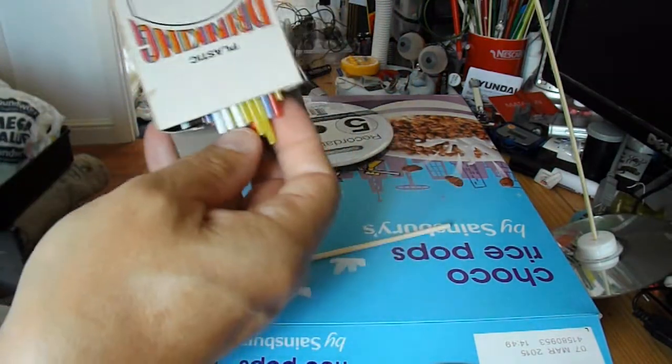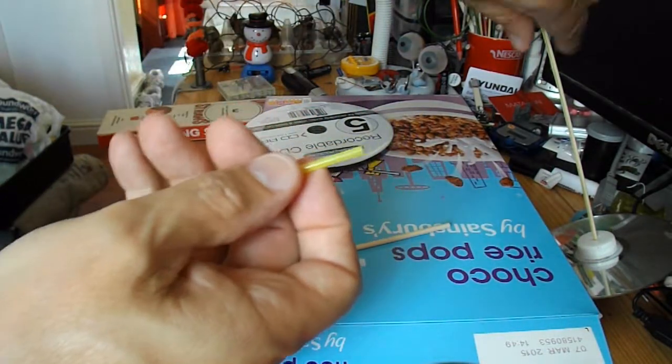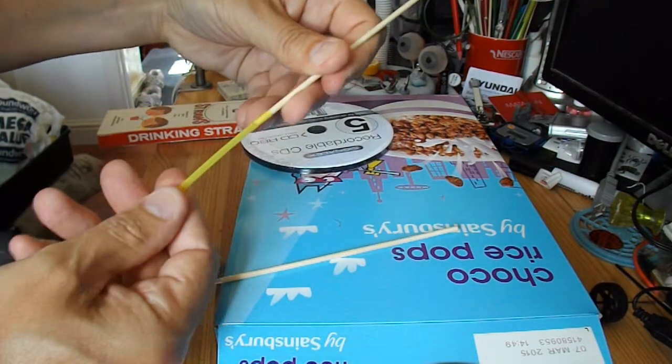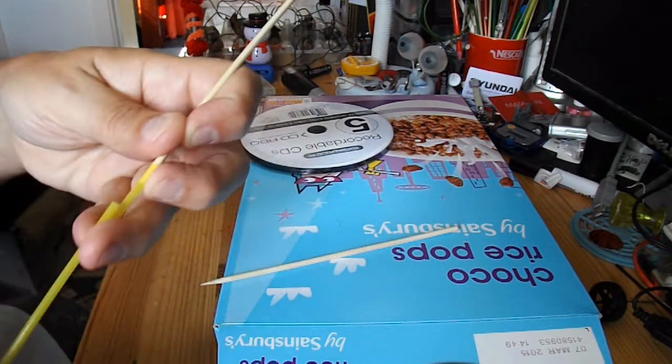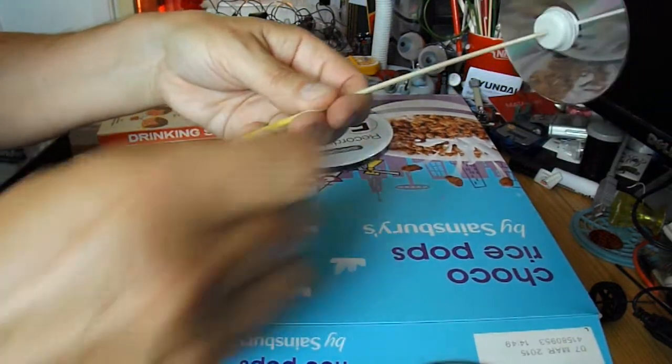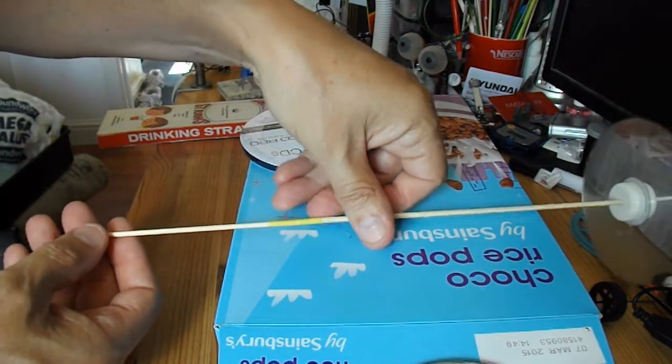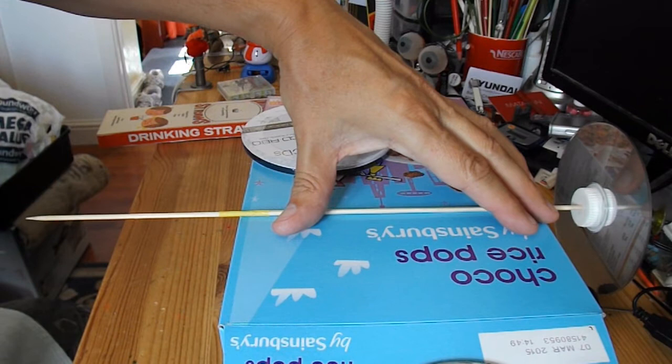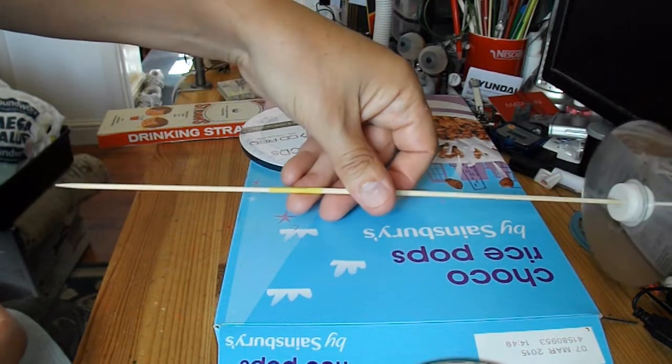And to do that I've got some very thin drinking straws here that are just about big enough to go over the barbecue skewer. So I can make it that little bit bigger. And that'll do to get across the width of the cardboard box then. I'll pop a little bit of hot glue in there just to hold it still. And that'll do for the front axle.